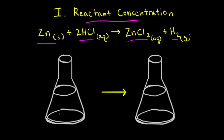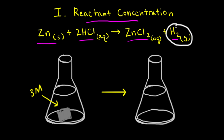Let's say we put a piece of zinc metal — I'll go ahead and draw in the piece of zinc metal — in a flask that contains 3 molar hydrochloric acid. As the reaction proceeds, hydrogen gas is formed. So we could monitor the rate of this reaction by observing the amount of hydrogen gas bubbles that are coming out of the flask.